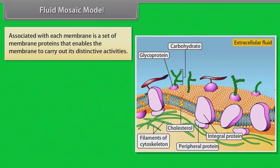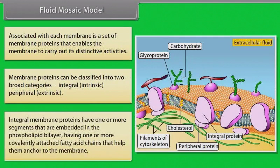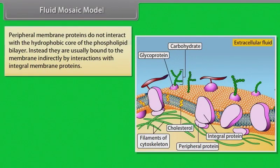Associated with each membrane is a set of membrane proteins that enables the membrane to carry out its distinctive activities. Membrane proteins can be classified in two broad categories: integral (intrinsic) and peripheral (extrinsic). Integral membrane proteins have one or more segments embedded in the phospholipid bilayer with covalently attached fatty acid chains that help anchor them to the membrane. Peripheral membrane proteins do not interact with the hydrophobic core of the phospholipid bilayer; instead, they are usually bound to the membrane indirectly by interactions with integral membrane proteins.